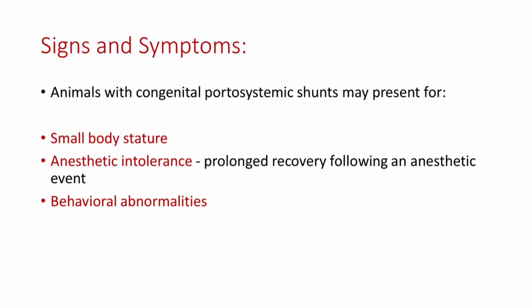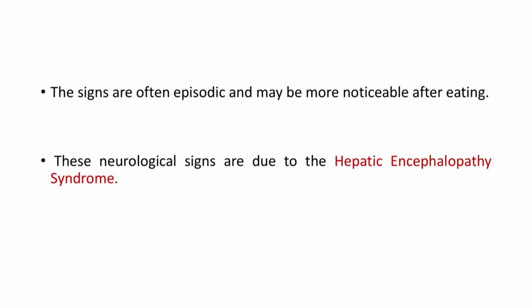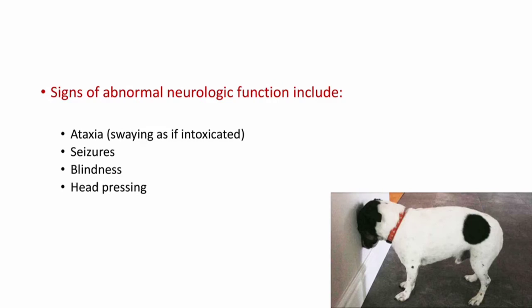Coming to the signs and symptoms of PSS: animals with congenital portosystemic shunt may present with small body stature, anesthetic intolerance — that is prolonged recovery following an anesthetic event — and behavioral abnormalities. The signs are often episodic and may be more noticeable after eating. These neurological signs are due to hepatic encephalopathy syndrome. Signs of abnormal neurologic function include ataxia, seizures, blindness, and head pressing.